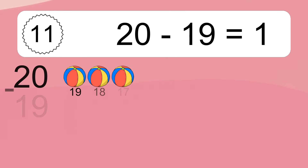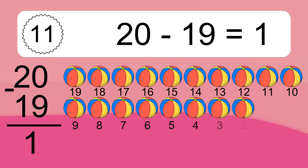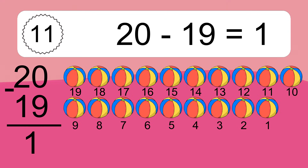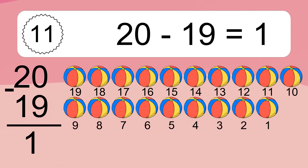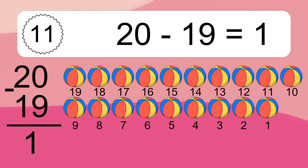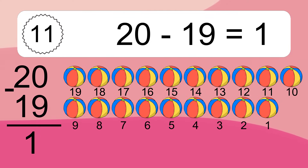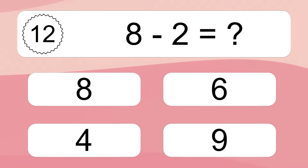20 minus 19 equals what? 20 minus 19 equals 1. Let's count it: 19, 18, 17, 16, 15, 14, 13, 12, 11, 10, 9, 8, 7, 6, 5, 4, 3, 2, 1.